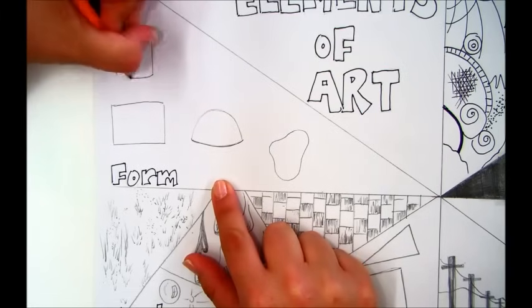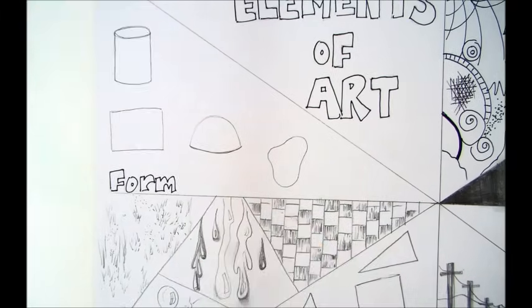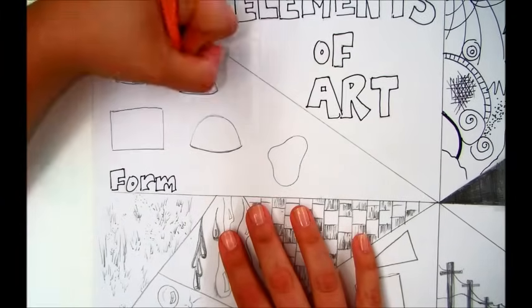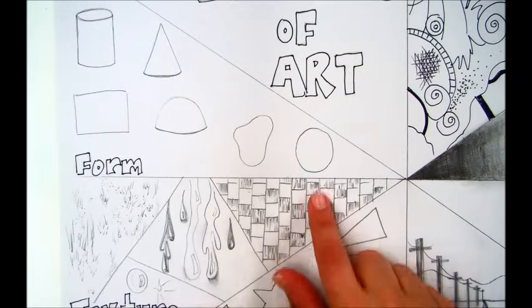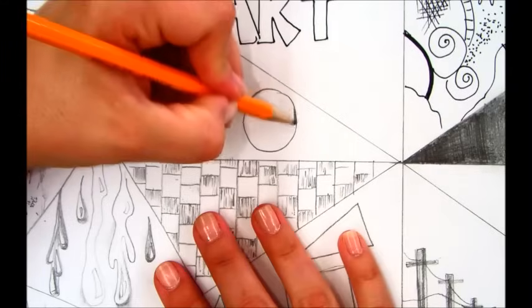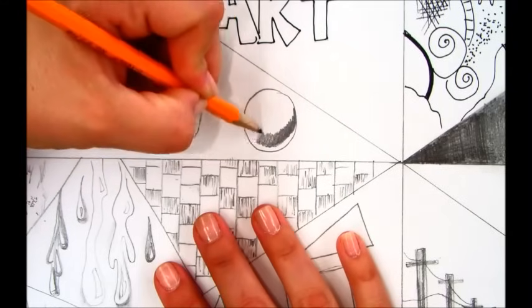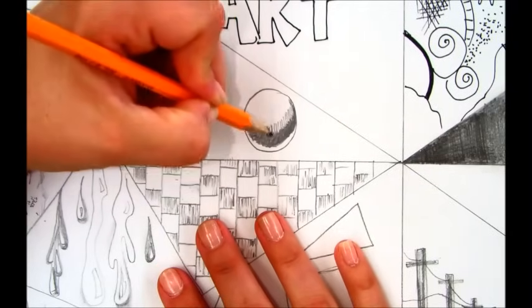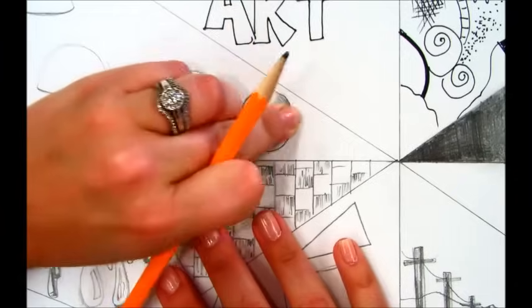Next, we're moving into form. Form is three-dimensional objects. So you start by drawing forms by drawing simple shapes. How we make objects look three-dimensional is by adding value.